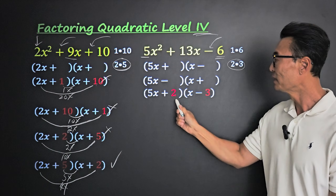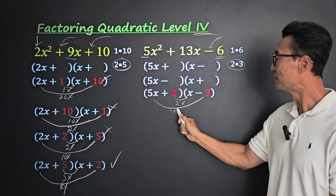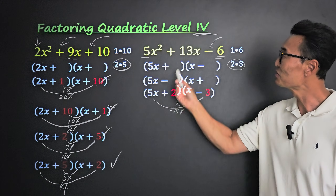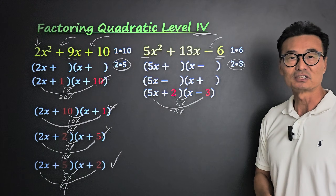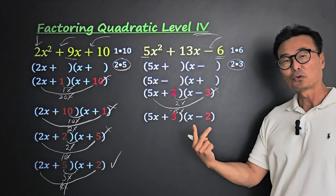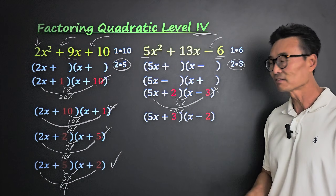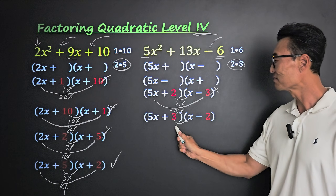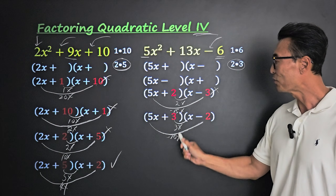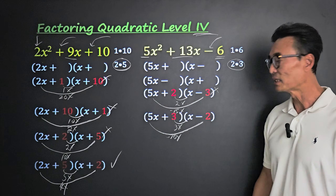We write down pairs of numbers that multiply to 6: 1 and 6, and 2 and 3. Let's try 2 and 3 first — putting 2 after the positive and 3 after the negative. Checking: 2 times x is 2x, and 5x times negative 3 is negative 15x. Combined, that gives negative 13x, not the positive 13 we wanted. Next, switching to 3 and 2: 3 times x is 3x, and 5x times negative 2 is negative 10x, giving negative 7x — again not positive 13.